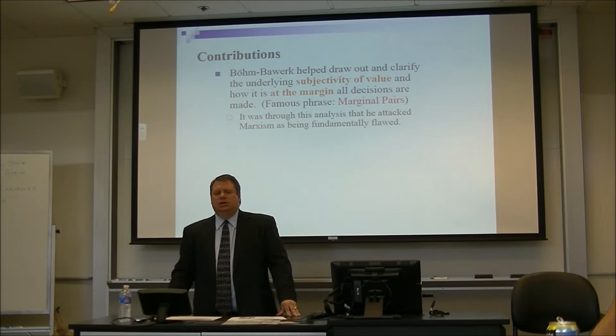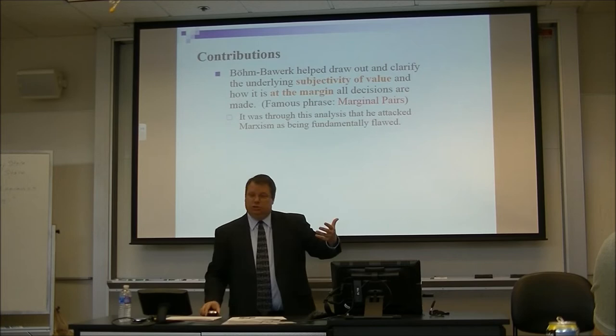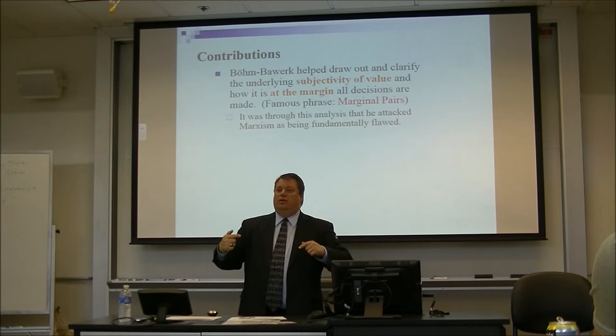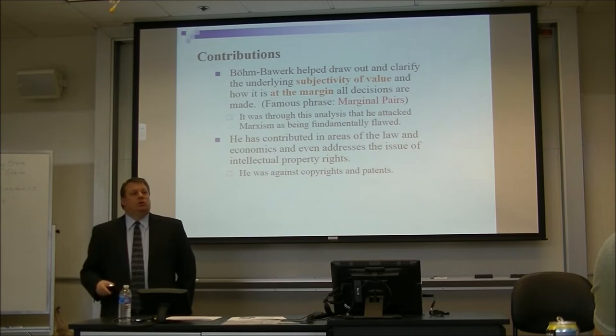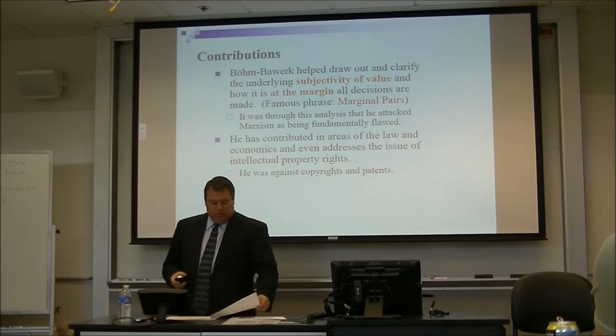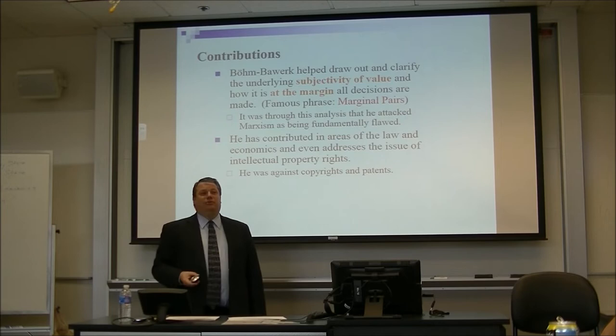Through this analysis, Böhm-Bawerk attacked Marxism. He wrote a book called 'The Close of the Marxist System,' saying it's fundamentally flawed because it uses the labor theory of value. Interestingly, Nikolai Bukharin actually sat in Böhm-Bawerk's lectures and seminars, then wrote a book — 'Economic Theory of the Leisure Class' — that is essentially a direct attack. If you hold both books up and go section by section, it's a direct refutation. Böhm-Bawerk also contributed to law and economics and addressed issues like intellectual property rights, where he was against patents and copyrights.